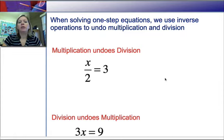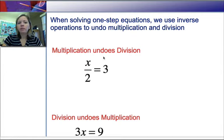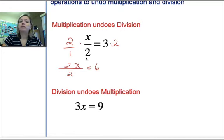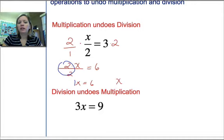If we look at this example, we have division — X is being divided by 2. So you want to ask yourself, what is it being divided by? It's being divided by 2. So we multiply both sides by 2 to undo that division. What's really happening is you're thinking about this as 2 over 1. So we have 2 times X divided by 1 times 2, which is 2. And over here we have 3 times 2, which is 6. Then simplify: 2 divided by 2 is 1, so we really have 1X equals 6, or just X equals 6.